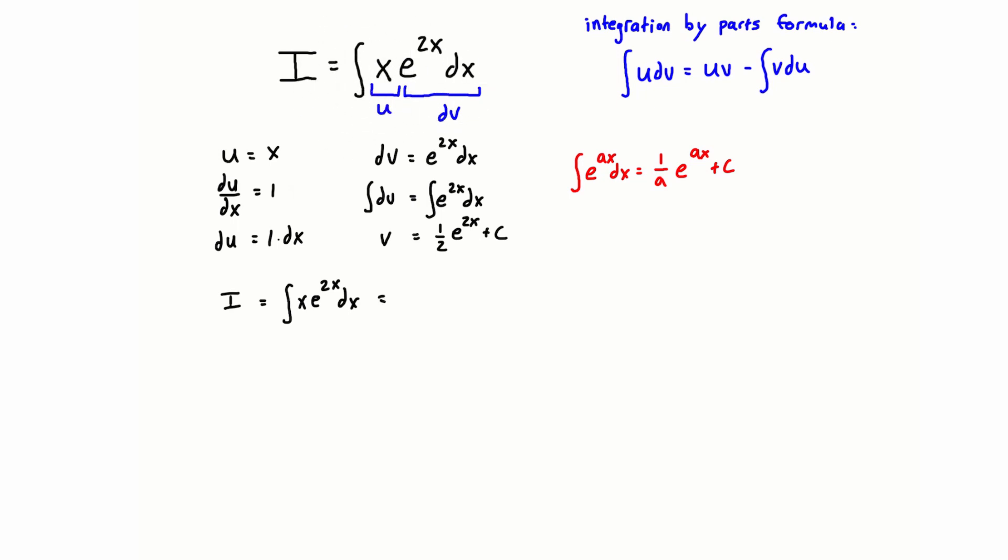And then for the right-hand side of the integration by parts formula, we just need to start plugging and jugging. So we have u times v. So let's find u. u is x. We've got x, and then v is right here, is 1 half e to the 2x plus c. So this is going to be times 1 half e to the 2x.